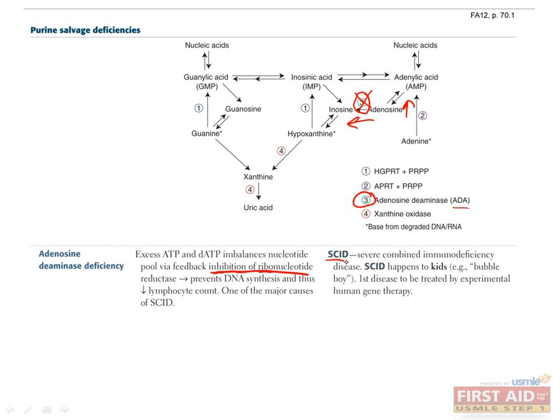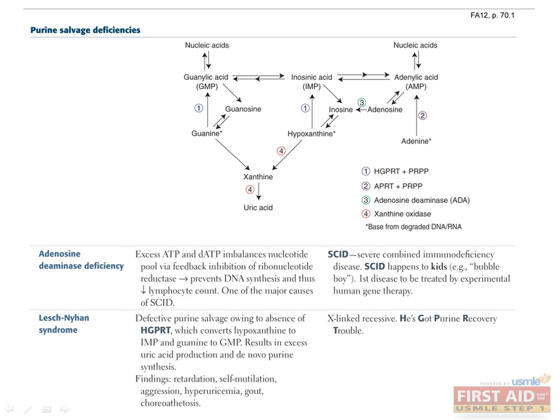The other important enzyme here is HGPRT, which stands for hypoxanthine guanine phosphoribosyltransferase, and is represented by the number 1 here and here. HGPRT converts guanine to GMP and hypoxanthine to IMP. So in its absence, guanine and hypoxanthine accumulate, and eventually get converted to uric acid. Accumulation of uric acid can directly manifest as hyperuricemia or gout, and can indirectly cause an array of neurological problems, including mental retardation, self-mutilation, which often includes biting, aggression, and choreoathetosis. This is Lesch-Nyhan syndrome.